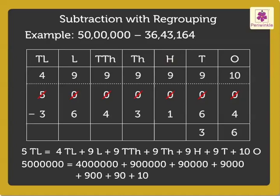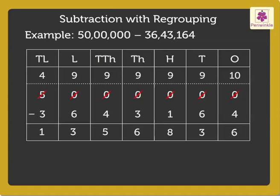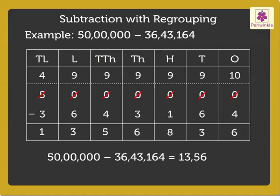Subtract the hundreds, i.e. 9 minus 4 is equal to 6. Subtract the thousands, i.e. 9 minus 4 is equal to 5. Subtract the lakhs, i.e. 9 minus 6 is equal to 3. Finally, subtract the 10 lakhs, i.e. 4 minus 3 is equal to 1. So, we get 50 lakhs minus 36,43,164 is equal to 13,56,836.